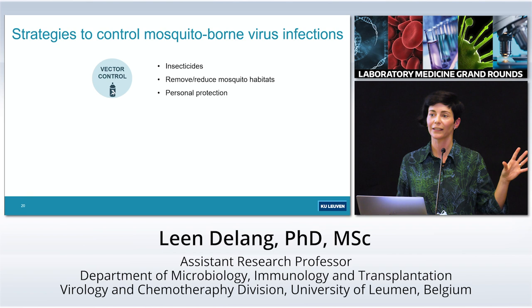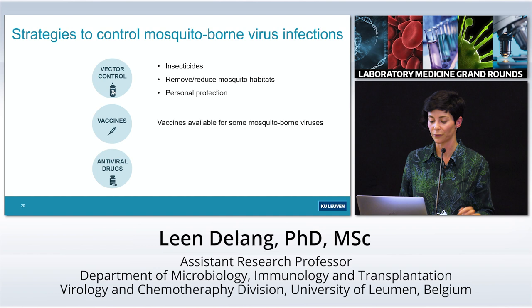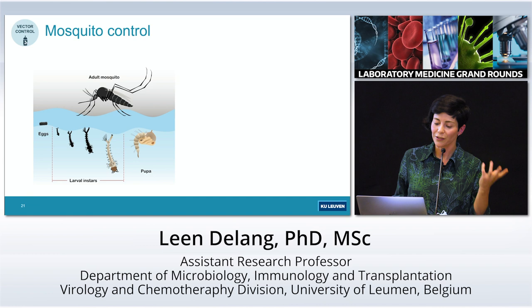What are the strategies we have to control mosquito-borne virus infections? There are actually three pillars: vector control based on mosquitoes, vaccines, and antiviral drugs.